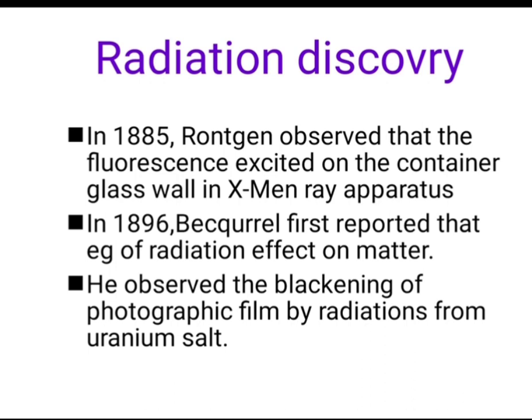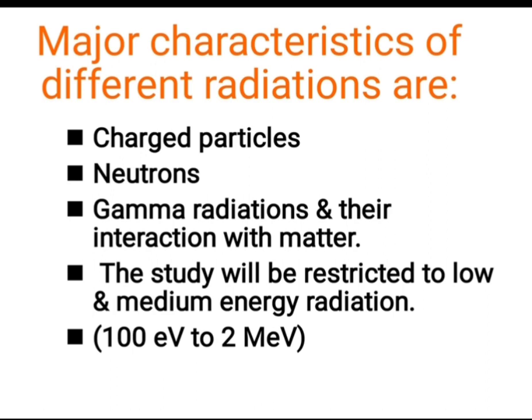By this way the radiations were discovered. The major characteristics of different radiations include charged particles — positrons and electrons are charged particles — then neutrons, then gamma radiations, and their interaction with matter. We will see three different kinds: charged particles, neutrons, and gamma radiations, and observe how each interacts with matter. The study is restricted to low and medium energy radiations of 100 electron volt to 2 mega electron volt energy.